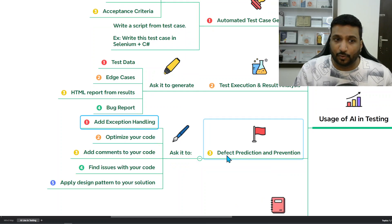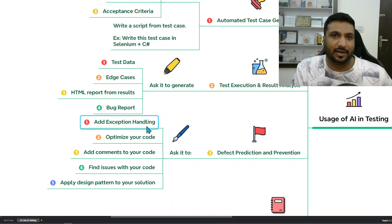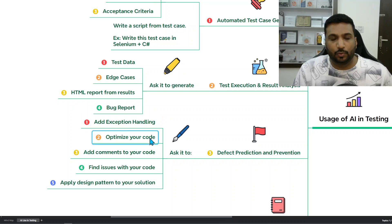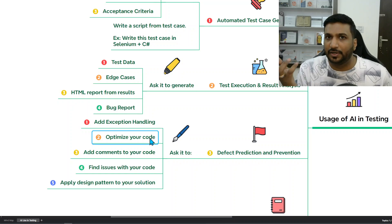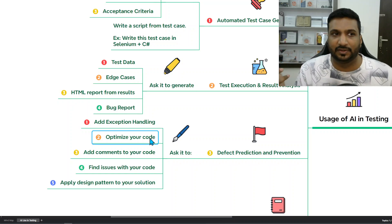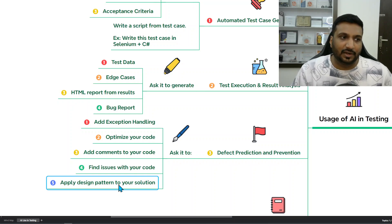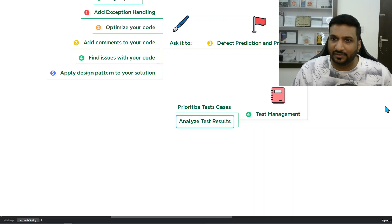The third use case is defect prediction and prevention. Especially with code, you can ask AI to add exception handling so you're not struggling with your own code exceptions. You can also optimize your code — if you have existing code, share it with GPT or other AI tools to optimize it, which is a powerful capability. Other possibilities include adding comments, finding potential issues, and applying design patterns. You can ask which design patterns would be most relevant for a given case.